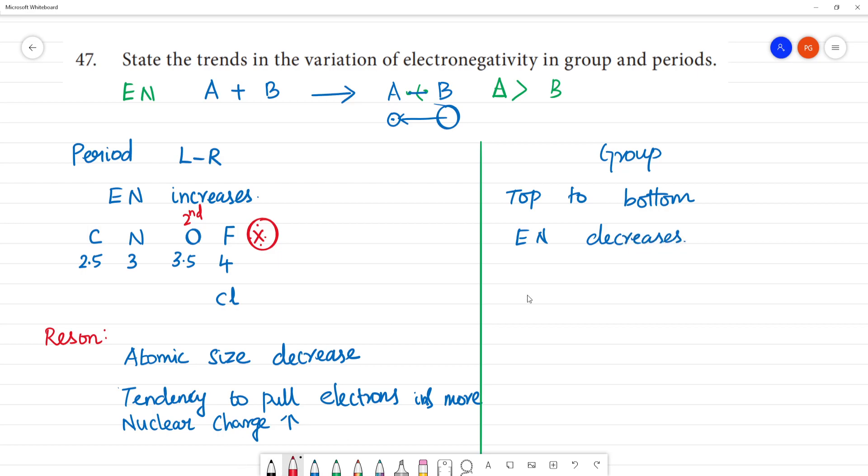So this is the same kind of reason. Atomic size decreases along period, but atomic size will increase going down a group. The atomic size increase, that's the main reason. Screening effect increases.